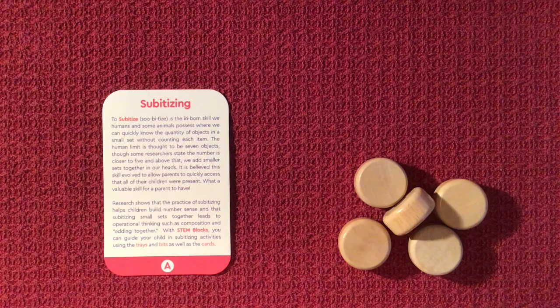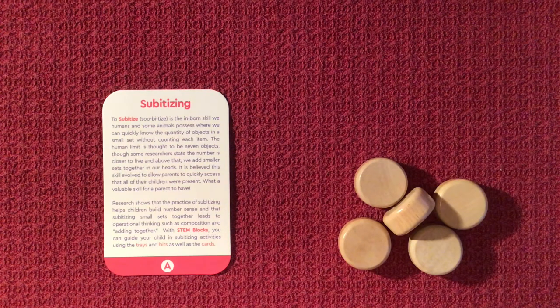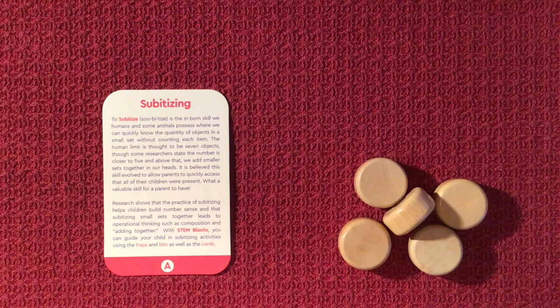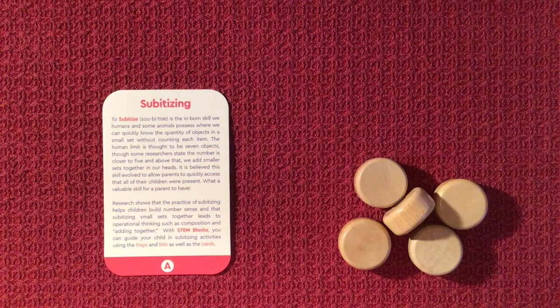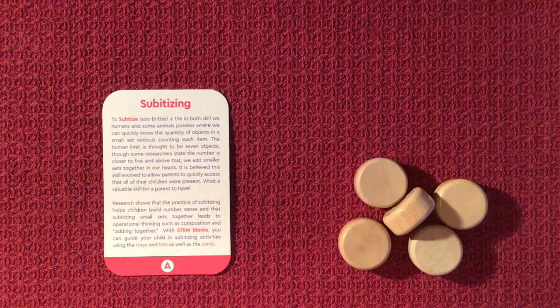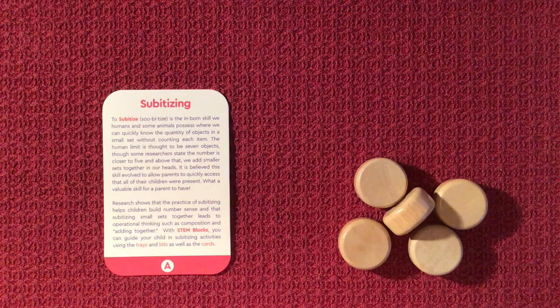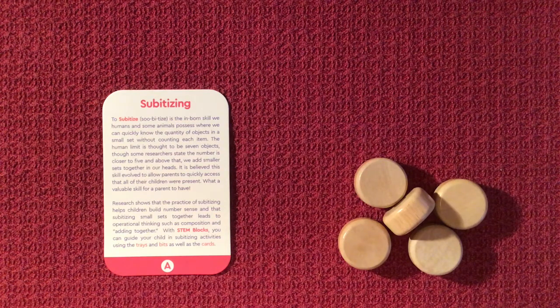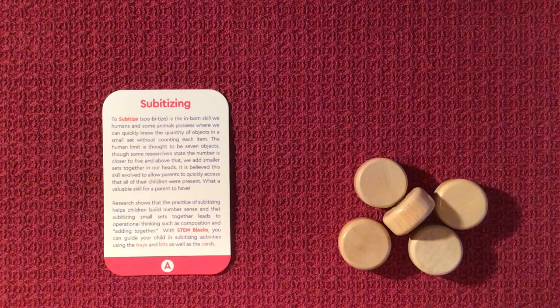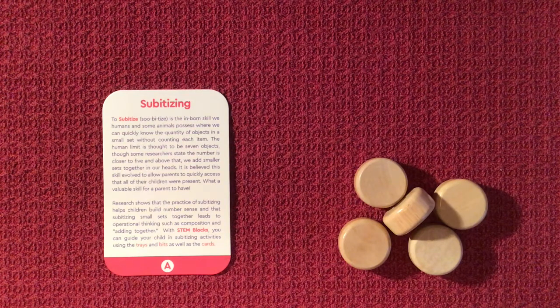It says, to subitize is the inborn skill we humans and some animals possess where we can quickly know the quantity of objects in a small set without counting each item. The human limit is thought to be seven objects, though some researchers state the number is closer to five, and above that we add smaller sets together in our heads.